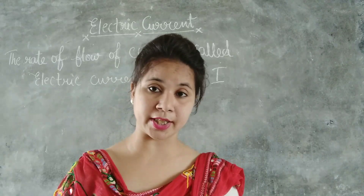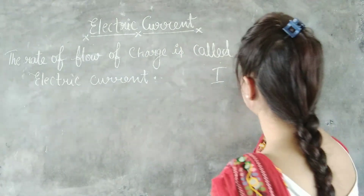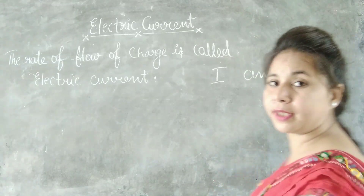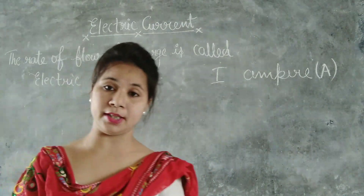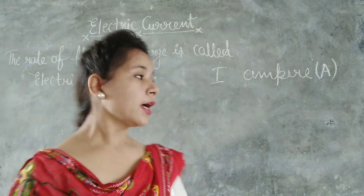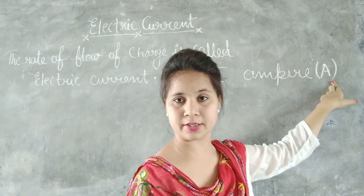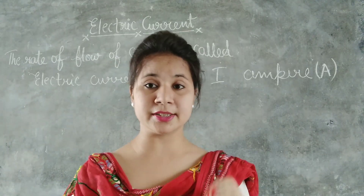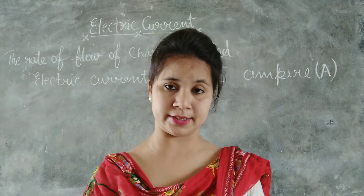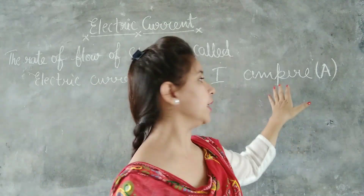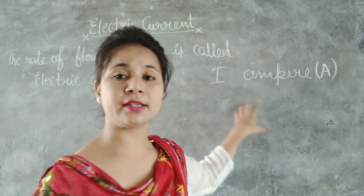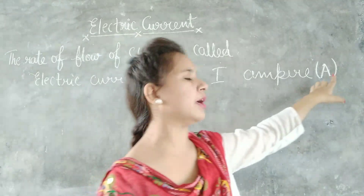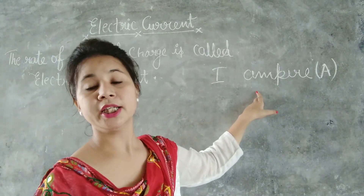The unit of electric current is Ampere, and its symbol is capital A. Do you know why we use a capital letter symbol? According to the rule of units, if any unit is named after a scientist, then its symbol is written in a capital letter and the full name is written in small letters. That is why the symbol of Ampere is written as capital A and the name as a small letter.